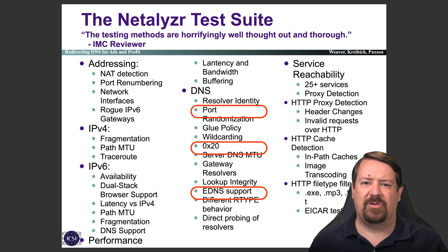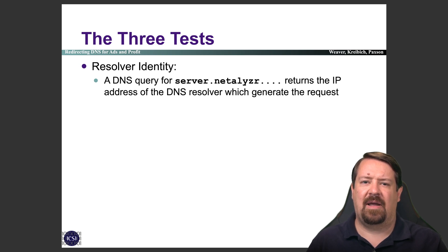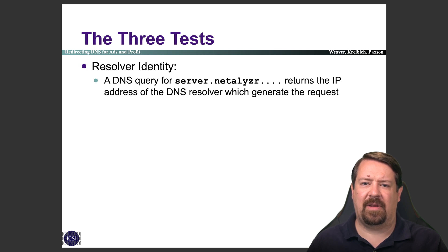The same group has published many more results focusing on other results of their Netalyzer test suite. First, they test to make sure that their DNS query for their own test server returns the correct IP address. This allows them to find out the IP address of the DNS resolver that's generating the request. The client runs this query through a local DNS resolver, and that resolver then has to talk to the authoritative server run by the Netalyzer folks, so they learn what DNS resolver is performing the lookup for the client.